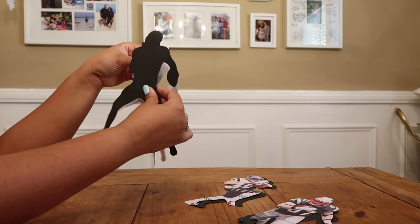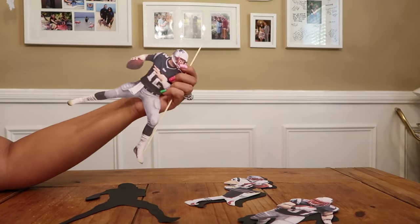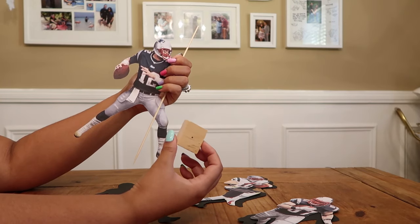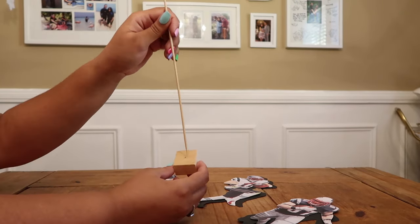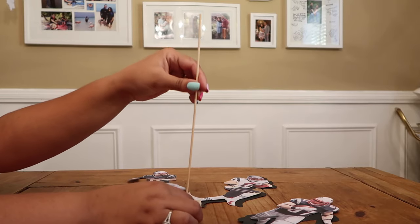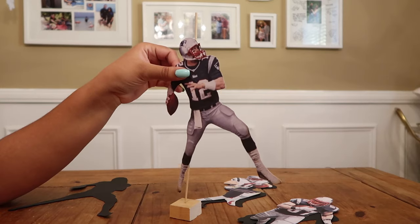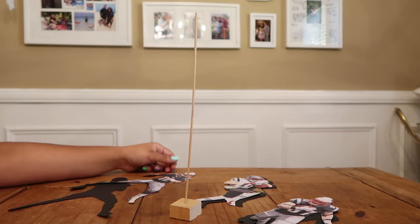And what I'm going to be using as a base to hold our shish kebab are these little squares that my husband cut out of wood. We pre-drilled a hole and as you can see once you stick it in, the shish kebab stands. So our image should be able to stand once it's glued on.